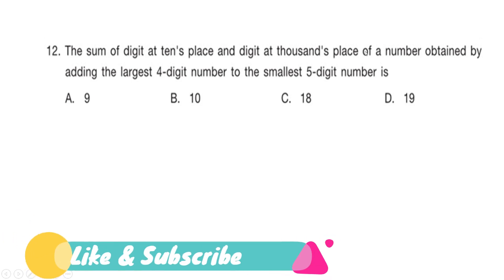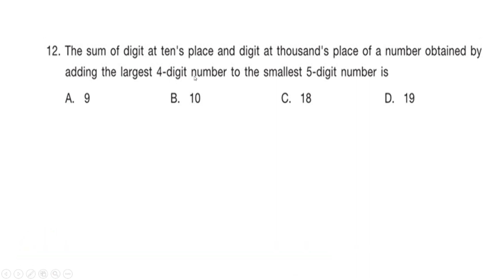Next question: The sum of the digit at the tens place and the digit at the thousands place of a number obtained by adding the largest four-digit number to the smallest five-digit number is — is it option A: 9, option B: 10, option C: 18, or option D: 19? Your time starts now.